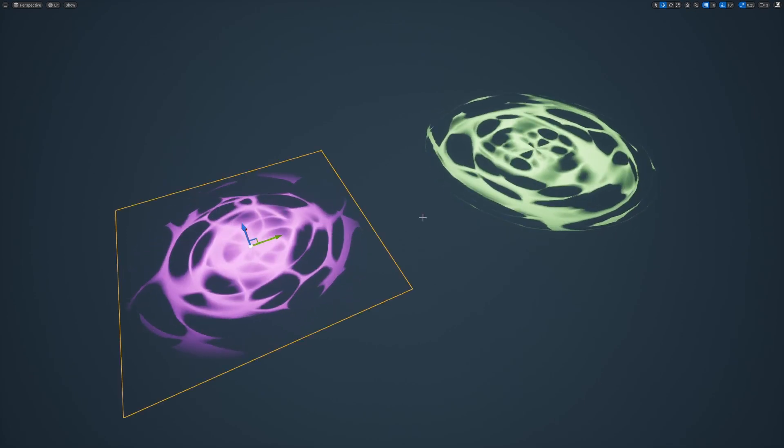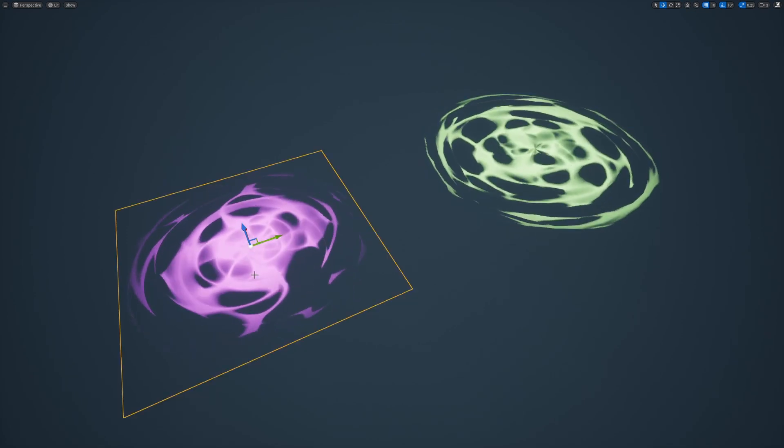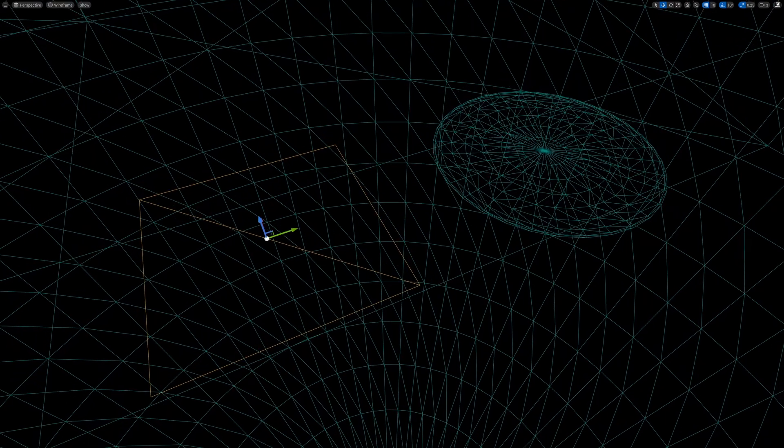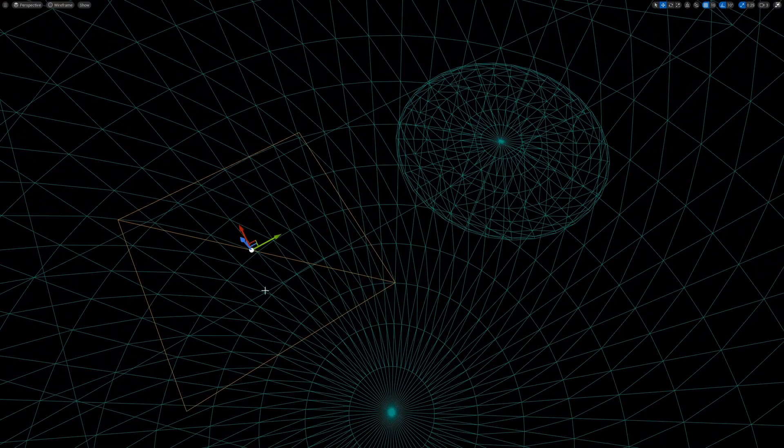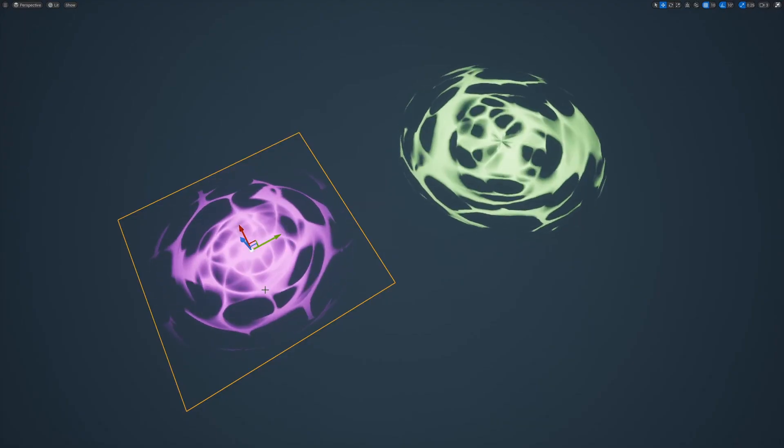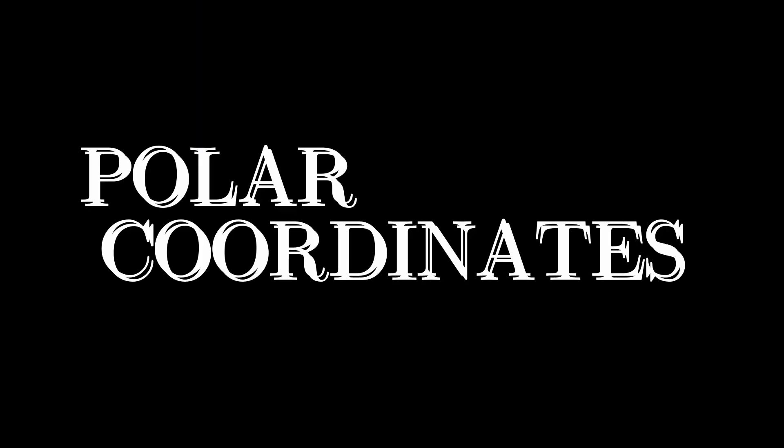But actually, this is a square plane mesh, not a disk. You might be wondering how the textures became circular then. It's by the power of polar coordinates. In today's video, I'll explain what polar coordinates are and how they can be used in materials to create VFX.